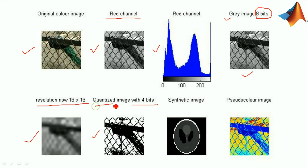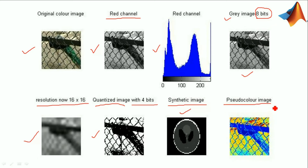This is the quantized image with 4 bits. Next is a synthetic image, which is generally used for computed tomography images — that is CT images. Finally, we'll go for a pseudo color image. I'm writing a MATLAB code so that you can understand very easily.